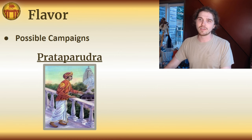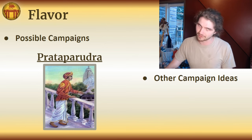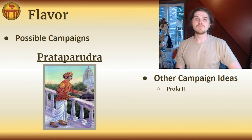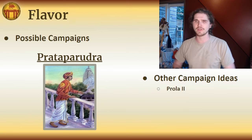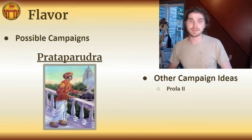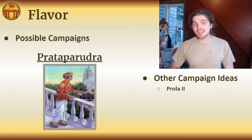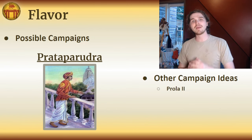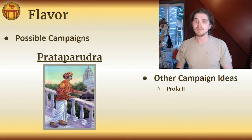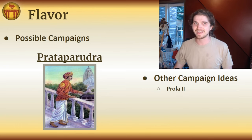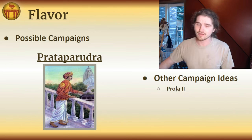Before we wrap the flavor section, let's touch on a couple of other campaign ideas that aren't quite as good as the first two. First is Prola II — a mighty Kakatyan chief who ruled during the Chalukya subservience. It was through his ambition and forward thinking that he managed to win victories against many nearby rivals, consolidate power, and set up his son as the first ever Kakatyan dynasty ruler of the Telugu lands. He himself was not truly a Kakatyan king, but he did set up the empire for its future success and was a pivotal character in Telugu history.